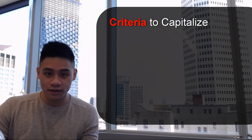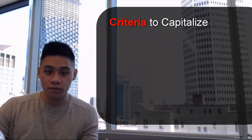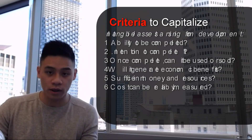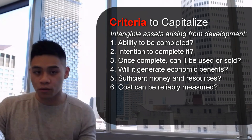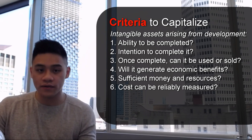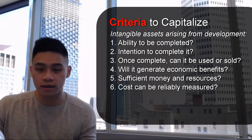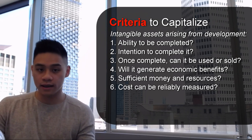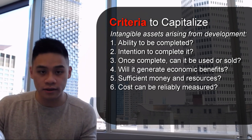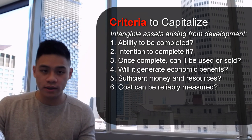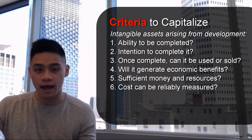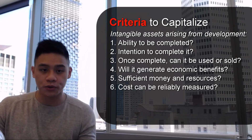Development costs and intangible assets arising from development can be capitalized if they meet six points. The first point is technical feasibility — is it able to be completed? The second point is whether there is intention to complete it. The third point is, once complete, is it able to be used or sold?